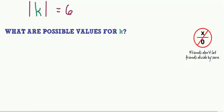Absolute value of k is equal to 6. What are some possible values for k? We just said that a number's distance from zero on the number line is its absolute value. So if the absolute value of k is 6, then k is 6 units away from zero.